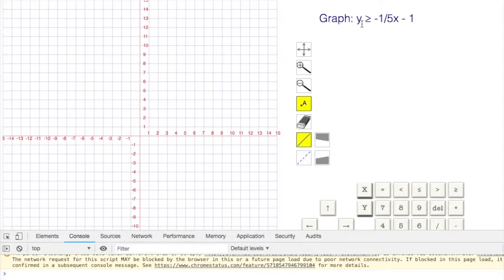Let's go on to level 14. y is greater than or equal to negative one-fifth x minus 1. We're not looking at equals, but it's kind of like a line where y equals ax plus b. The b is negative 1. I'm going to find that first.